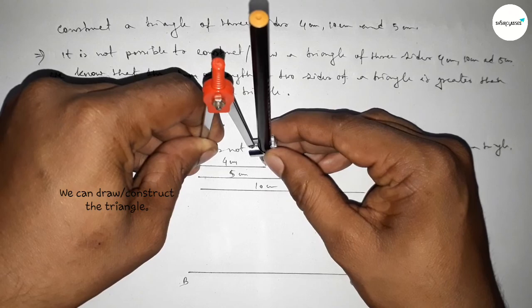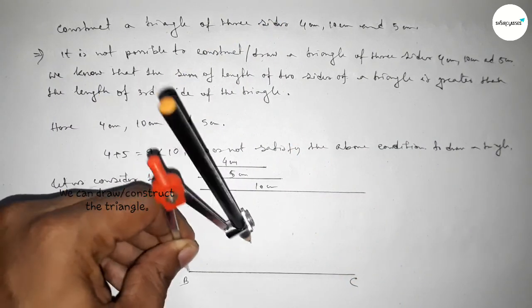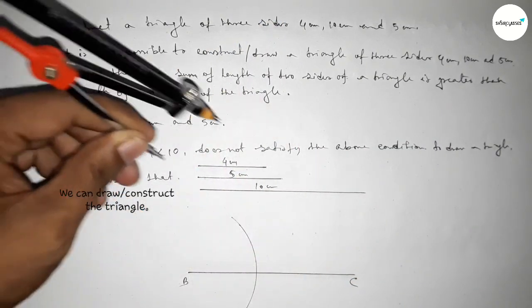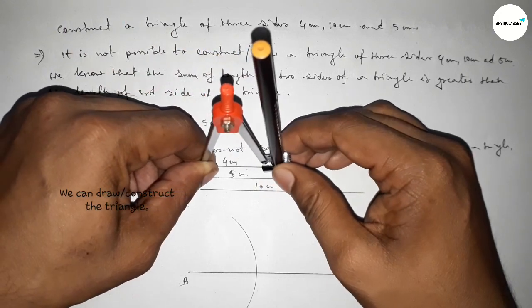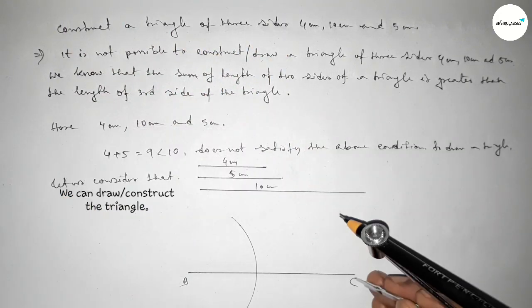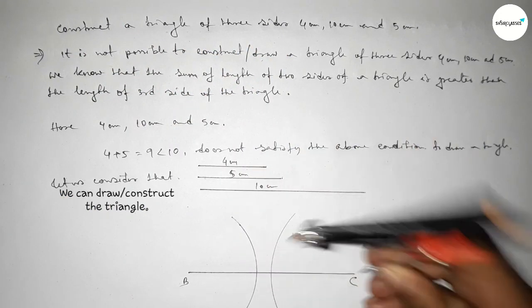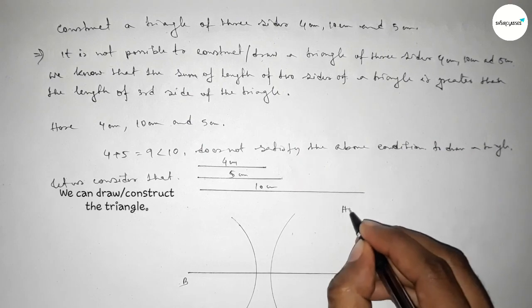Now taking the length 4 centimeter by using compass this way and putting the compass here and drawing an arc here. Now taking the length 5 centimeter and putting the compass here and drawing an arc here.